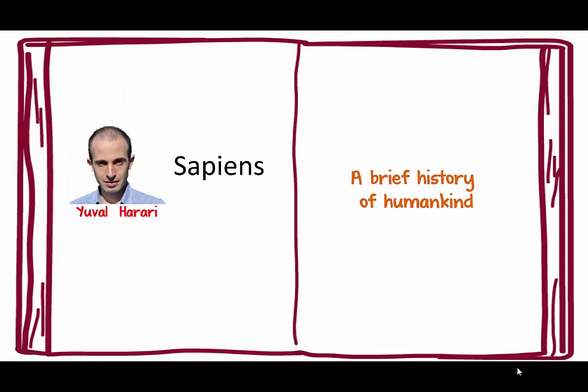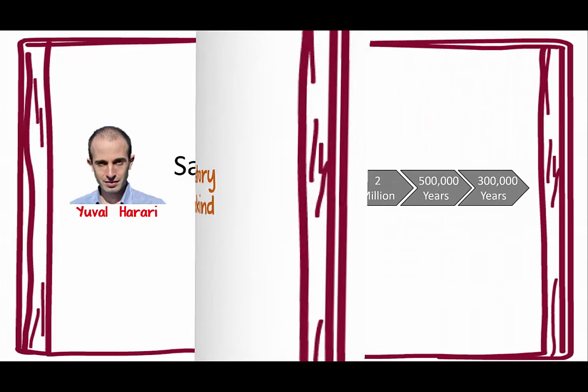What we're going to talk about here is Harari's book, Sapiens, which he has subtitled A Brief History of Humankind.